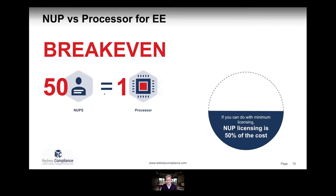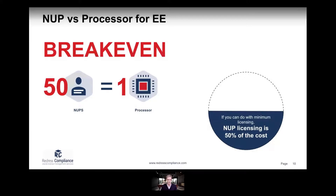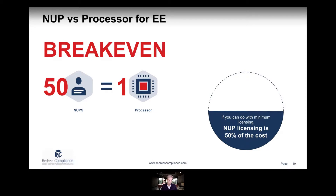The break-even point, as discussed, is 50 NUPs to one processor. With minimum licensing considered, you can get away with roughly half the licensing cost if you are able to follow the minimum licensing rules and your actual user numbers don't exceed the minimum. This is especially worth considering in controlled, virtualized environments where sub-capacity licensing isn't available — NUP licensing can be a good way to get out of a difficult situation.